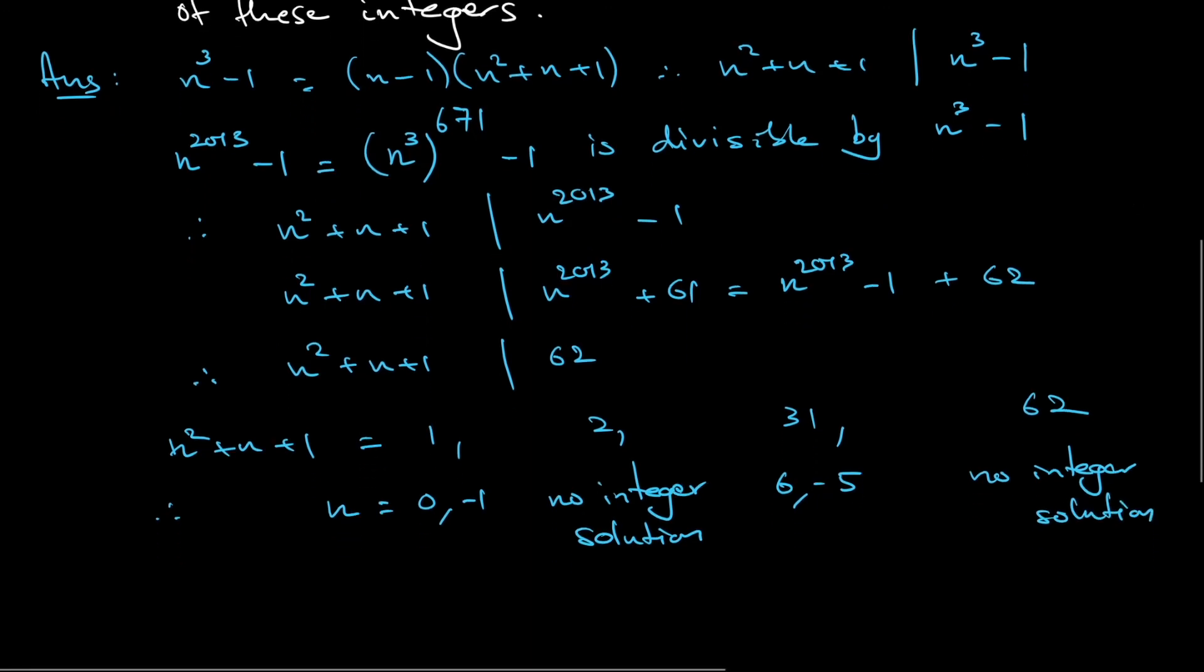So, that means that the possible values of n are 0, -1, 6, and -5.